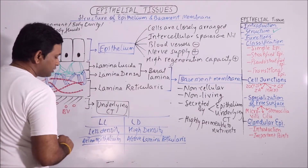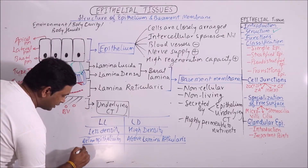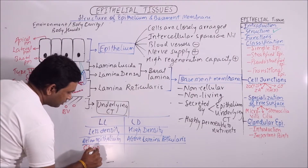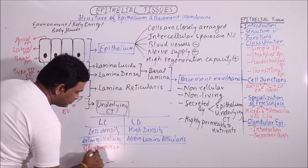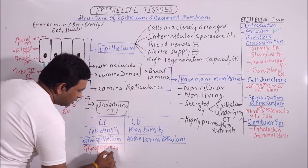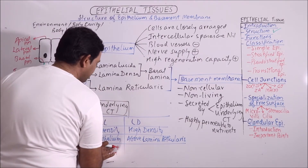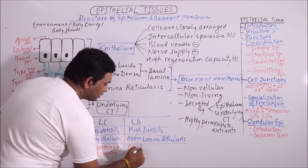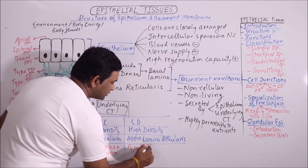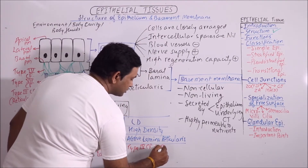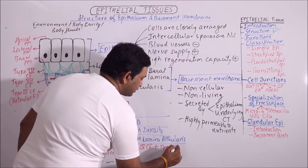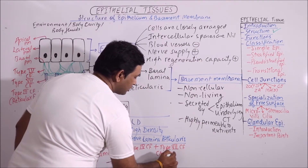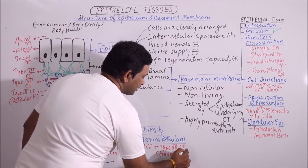Regarding composition, lamina lucida contains glycoproteins plus laminin. Lamina densa contains type 4 collagen fibers plus type 7 collagen fibers, which are also known as anchoring fibrils.